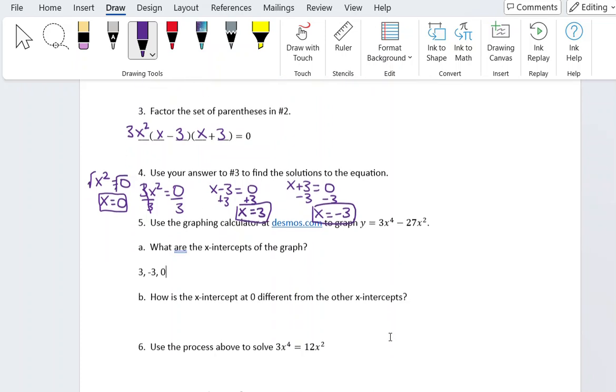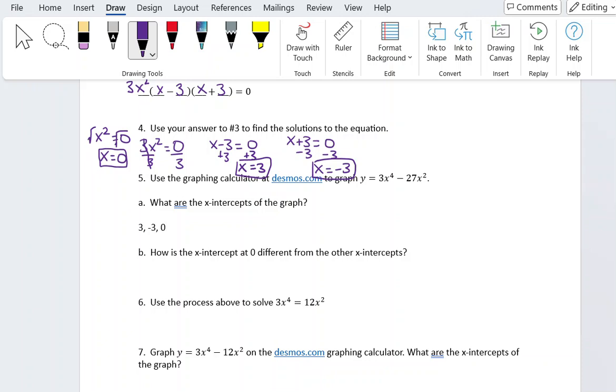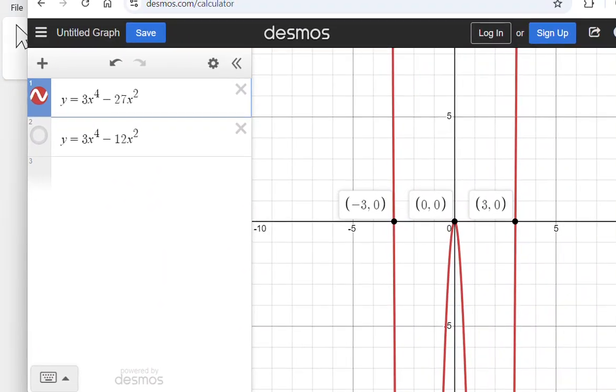Now, how is the x-intercept at 0 different from the other x-intercepts? We see it looks a little bit funny here because at these x-intercepts the graph is crossing the x-axis. This one, it doesn't cross. It actually does what's called touching and turning around.